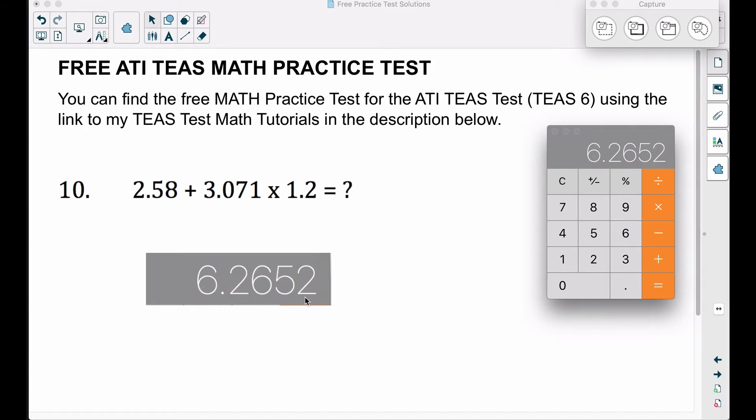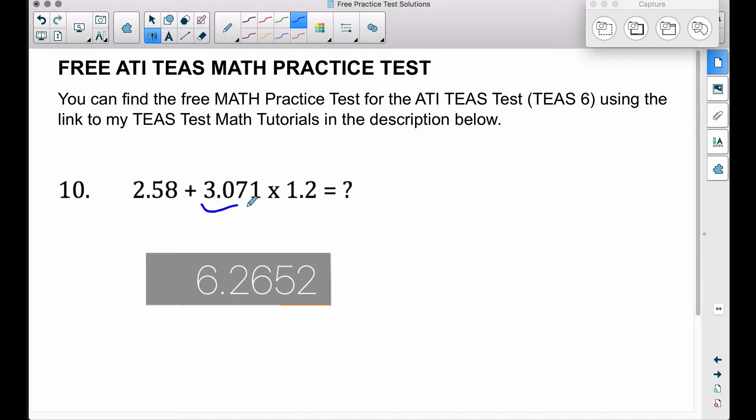Now let's look at how to do this without a calculator for those of you that want to push the envelope further. Since we want to multiply these two first based on order of operations, I'm going to ignore the decimals for now and write 3,071, ignoring that decimal, and multiply by 12, ignoring the decimal there as well.